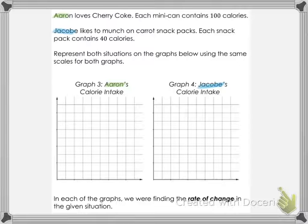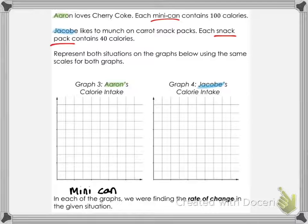Let's look at another example. Aaron loves Cherry Coke — each mini can contains 100 calories. Jacoby likes to munch on carrot snack packs — each snack pack contains 40 calories. Represent both situations on graphs below using the same scales. Again, let's have Aaron on the left and Jacoby on the right. We want the same scale on both graphs.